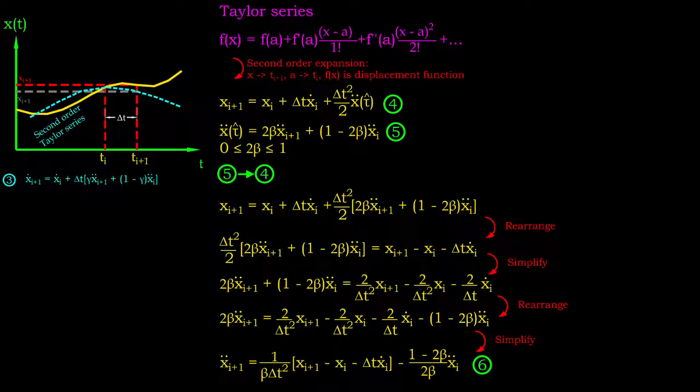Now, let's expand the term displacement at the instance of i plus 1 to second order Taylor series. The acceleration is now a function of time tau cat. It is also expressed as a sum of acceleration at two adjacent instances. The only difference is, the weightage is now 2 beta instead of gamma for the previous case. We then substitute the acceleration expression back to the displacement equation.